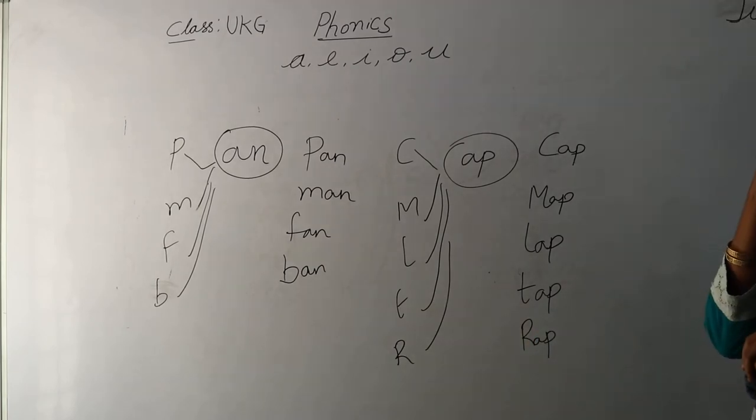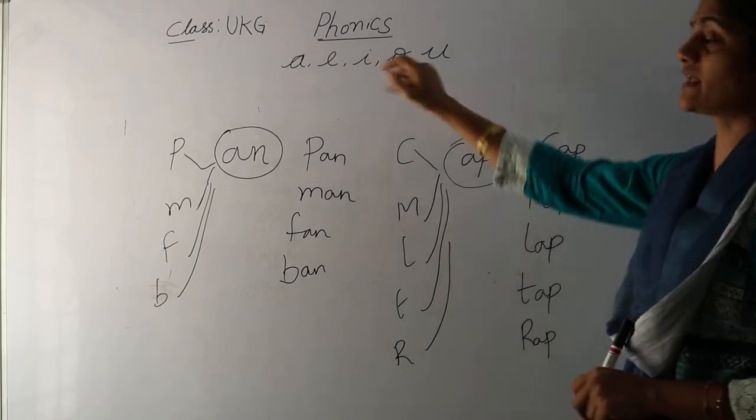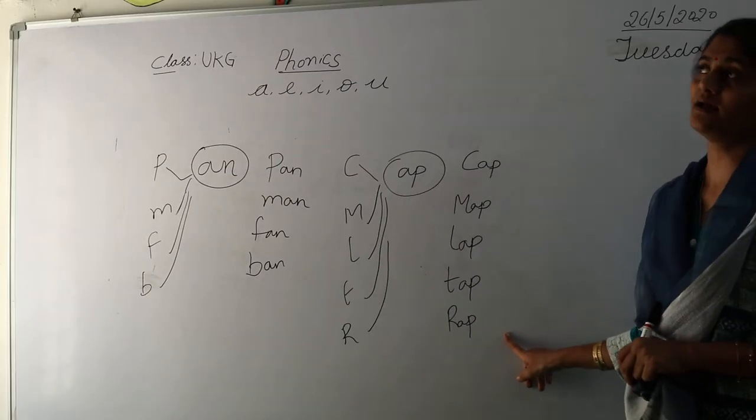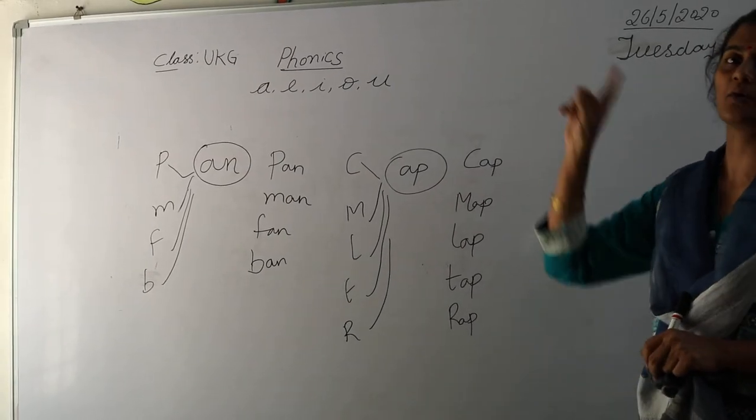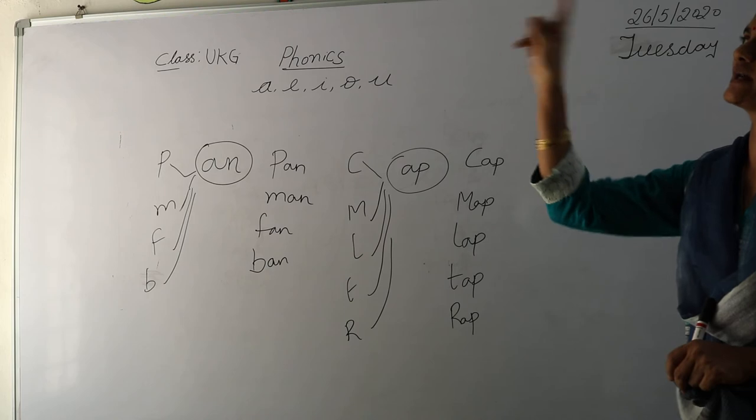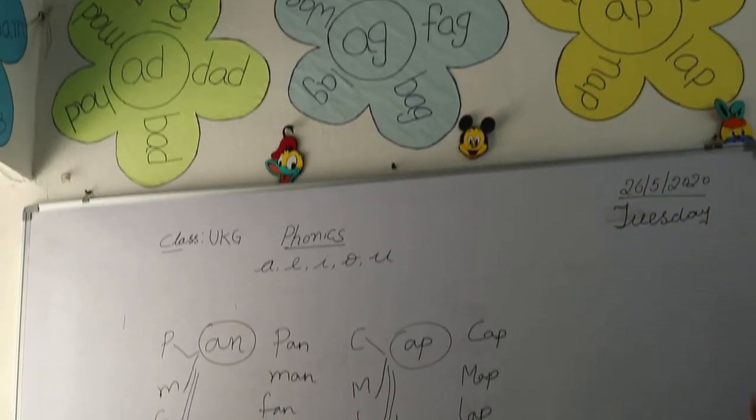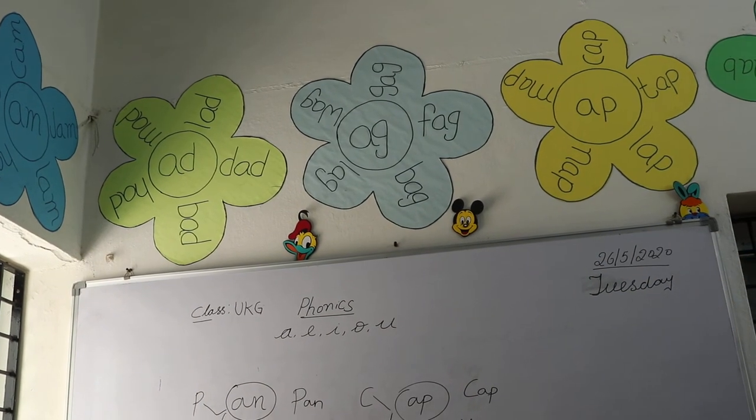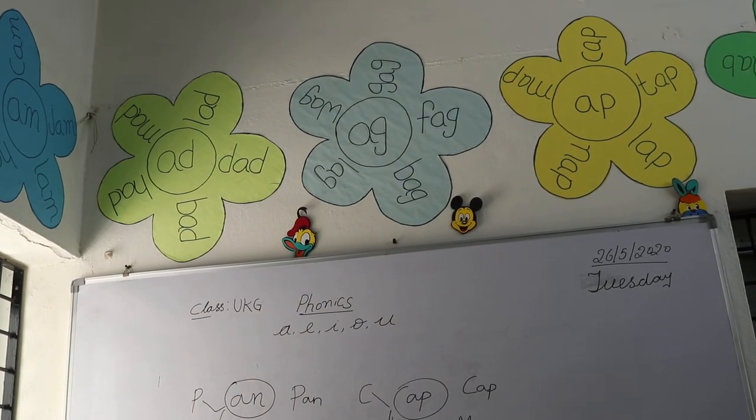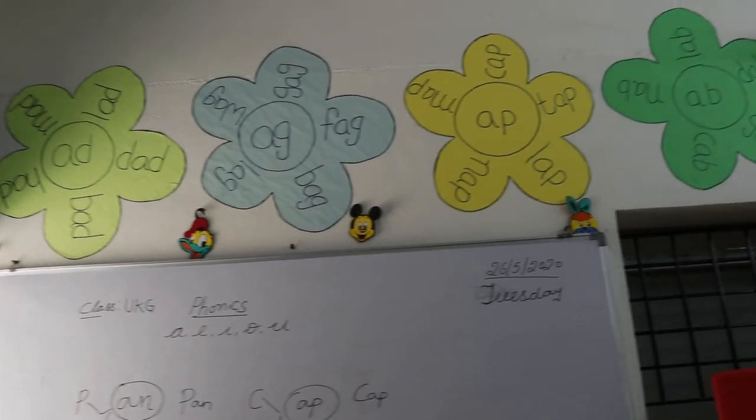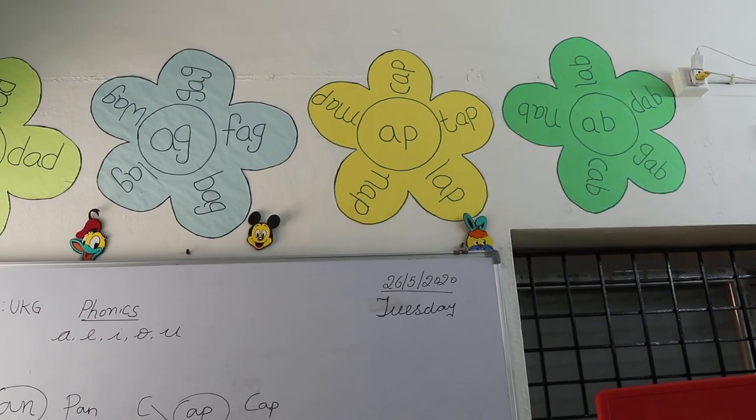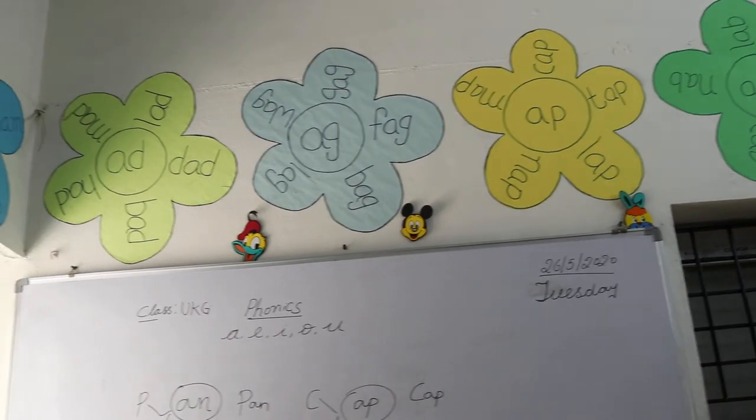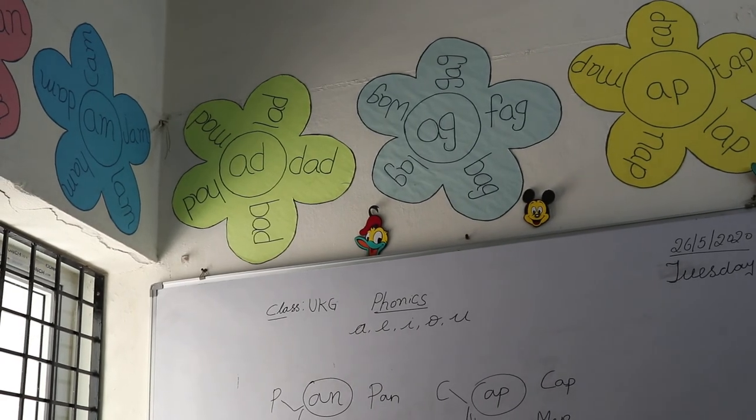So you need to practice these letter sounds, the letter sounds with A. And you need to practice this family, same family words. Now take a look at the classroom around. Now you can see the family words. There are some flowers on the wall. And you can see am, ad, ag, ab. Can you see them? There are different color flowers which are put up on the wall. So you need to practice every day. You need to practice your phonics, your reading.